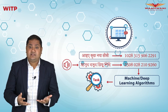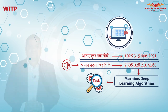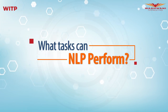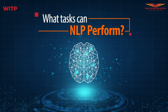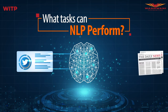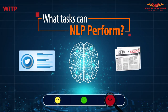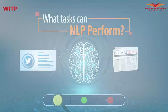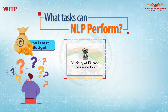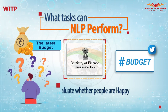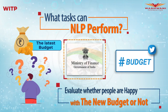Once our text is converted to numbers, we use specialized machine learning and deep learning algorithms to train them for specific tasks using large amounts of data. One such task is sentiment analysis — given a tweet or a newspaper article, we can determine whether the text is displaying a positive, negative, or neutral sentiment. For example, if the Ministry of Finance wants to evaluate what people think about the latest budget, they can look at all tweets with the hashtag 'budget' and use NLP to evaluate whether people are happy with it.